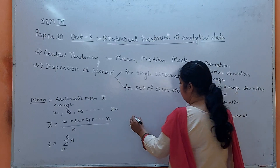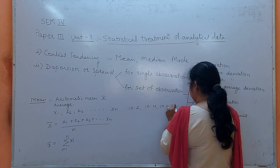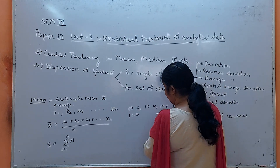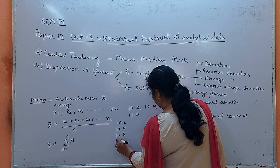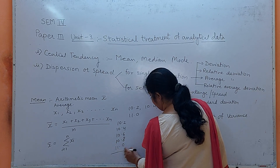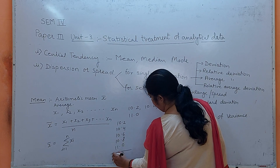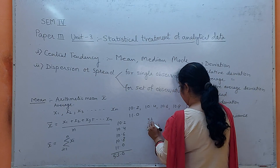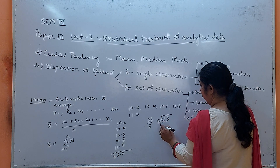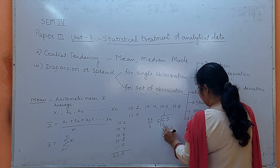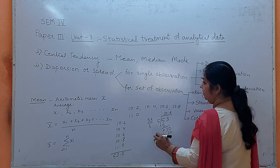For example, suppose your readings are 10.2, 10.4, 10.6, 10.8, and 11. To find the mean, sum them up: 10.2 + 10.4 + 10.6 + 10.8 + 11 = 53. Divide 53 by 5 (there are 5 observations), and you get 10.6. So 10.6 is the mean here.